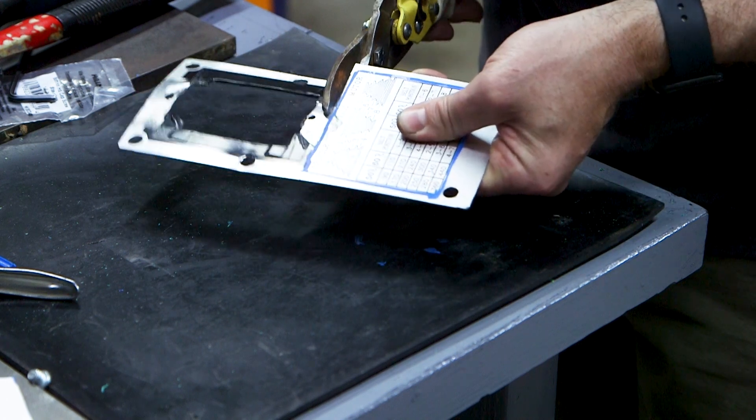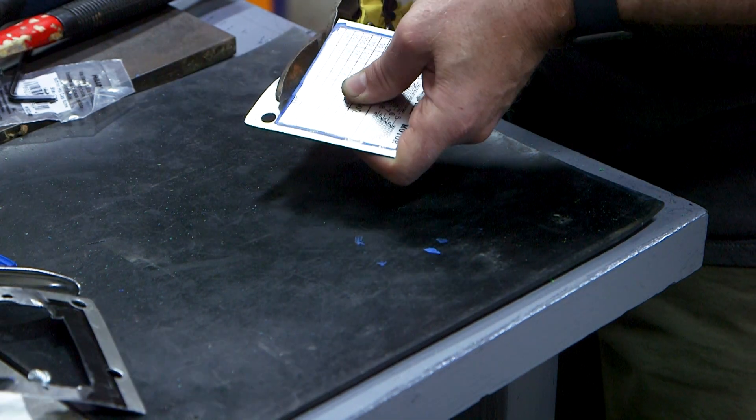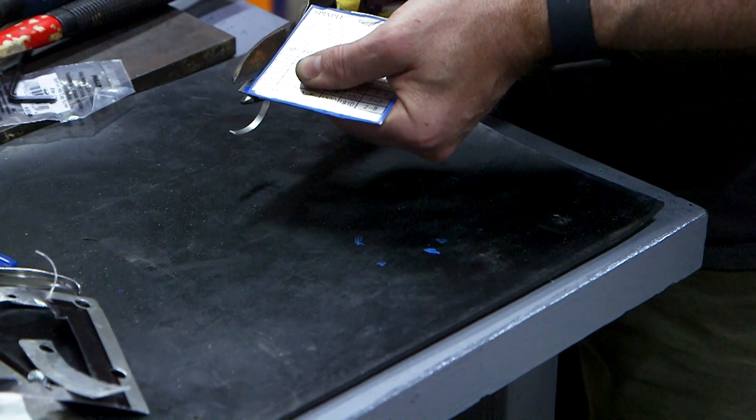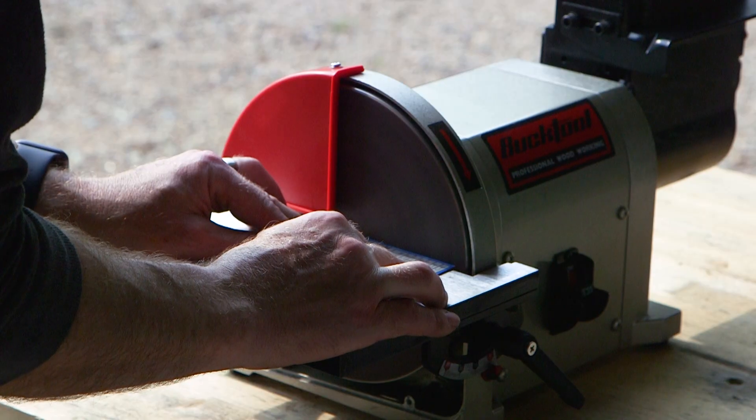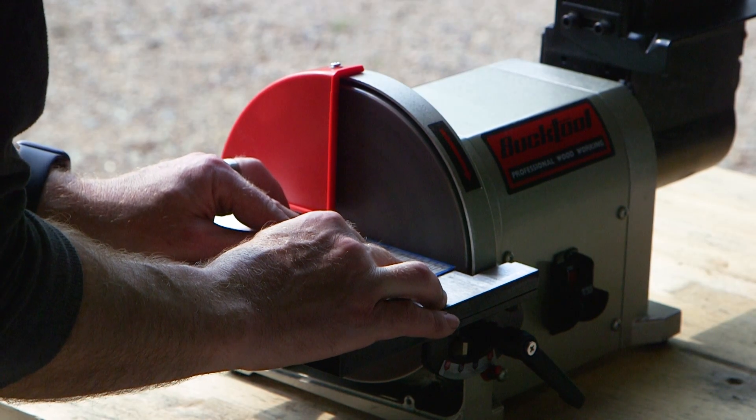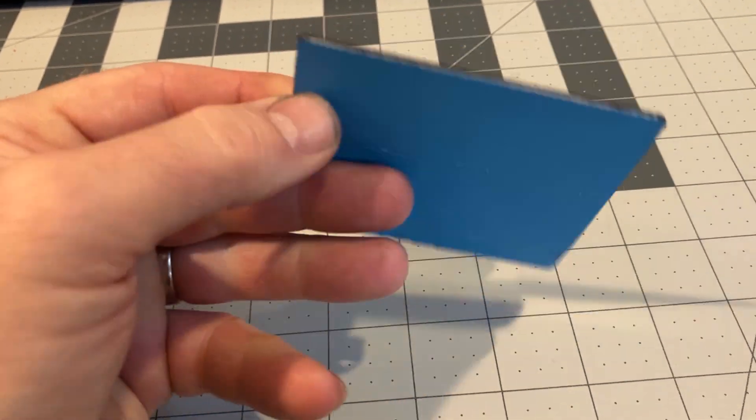I'm still using the step pulleys so I wanted to keep the speed chart on the front of the machine. To use it I trimmed it out with some snips, cleaned up the edges on my sander and then I held it to the front cover with some double sided tape.